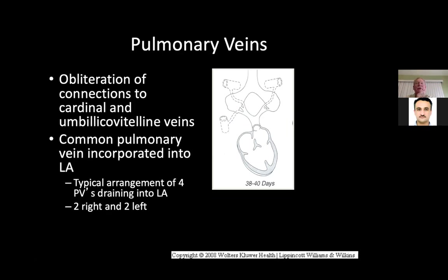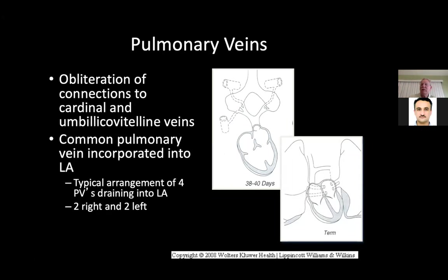There's obliteration of the connections to the cardinal and umbilical vitelline veins, and then the common pulmonary vein incorporates into the left atrium. It continues to separate into four pulmonary veins draining the left atrium — two on the right side and two on the left side — through further septation of the common pulmonary vein. You can see why sometimes there are four veins, sometimes five, sometimes three, and sometimes these veins attach to the SVC rather than the left atrium.